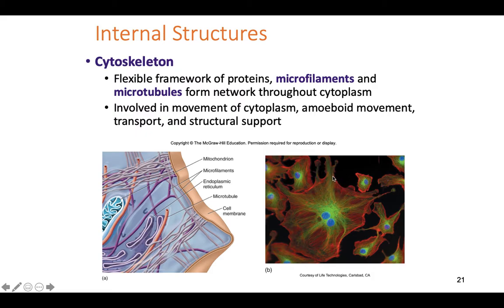The cytoskeleton runs all throughout the cell like a little road that proteins and vacuoles can be attached to and sent around. It's used to move chromosomes during mitosis and meiosis, and it can influence the way eukaryotic organisms move. An amoeba, for example, sends its microtubules up in one direction and then oozes towards them.